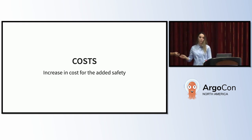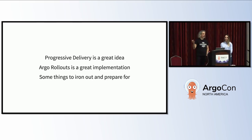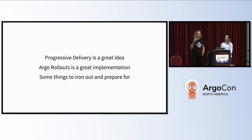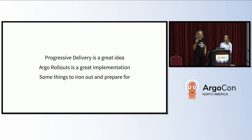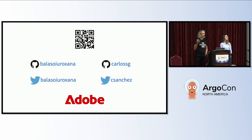To wrap up — three things to remember: Progressive delivery is a great idea. Argo Rollouts is a great implementation that makes it very easy to adopt progressive delivery. Something that before would take a lot of time, coding, and building services is now very easy to do. You just need to take care of a few things: watch the metrics you are using, set up your analysis templates for your use case, and consider a few of these points. We are very happy with Argo Rollouts. There's a QR code for feedback — if you have good feedback you can leave it there, if you have bad feedback you can give it to us privately. And if you have any questions, we'll take them now. Thank you.